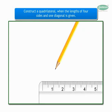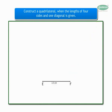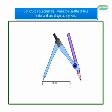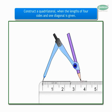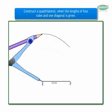Draw segment EF of 2.5 cm with the help of a ruler, which is our base of the quadrilateral. As you can see from the rough figure, the measure of the diagonal DF and the measure of one side, DE, is equal to 3.5 cm. We shall measure 3.5 cm on the compass and draw an arc from point E on the right-hand side.